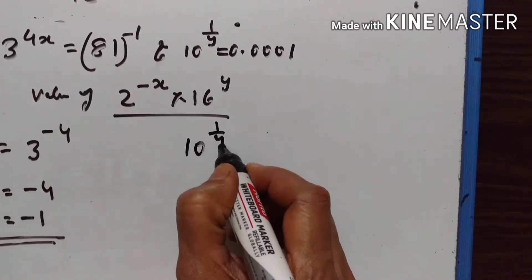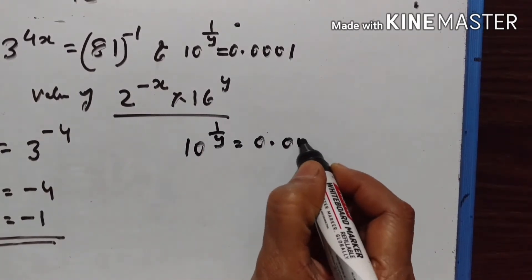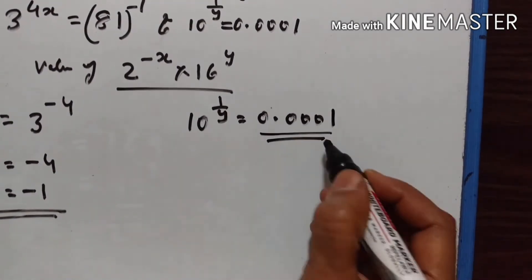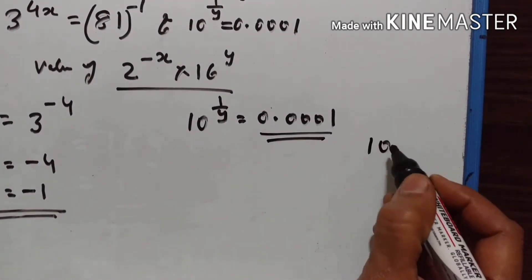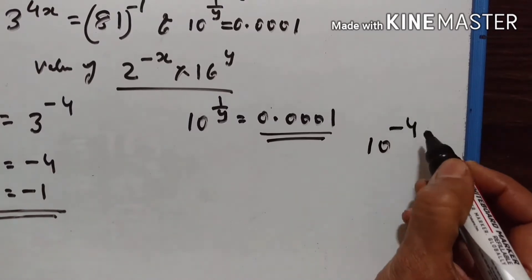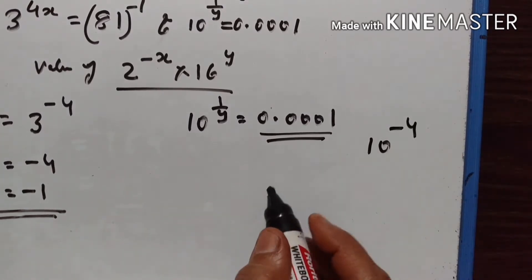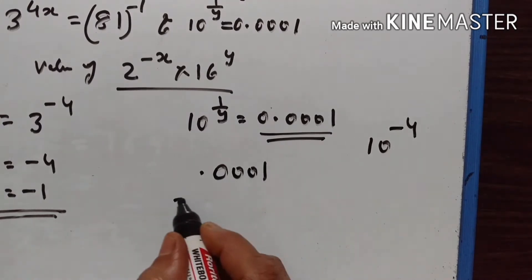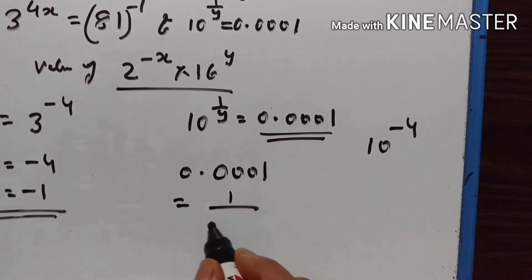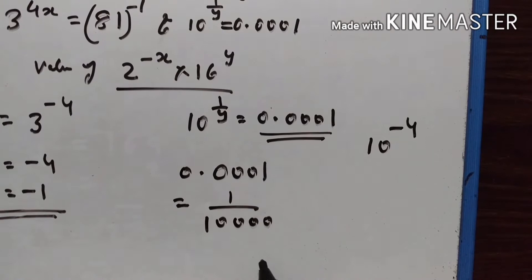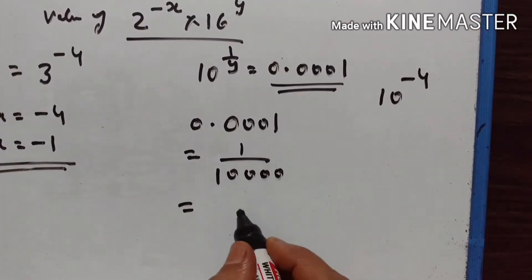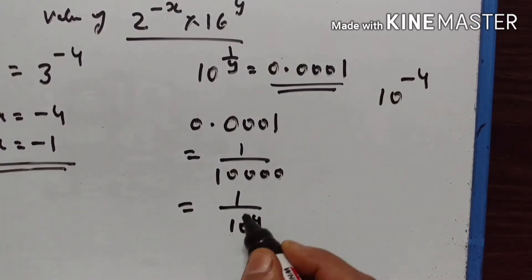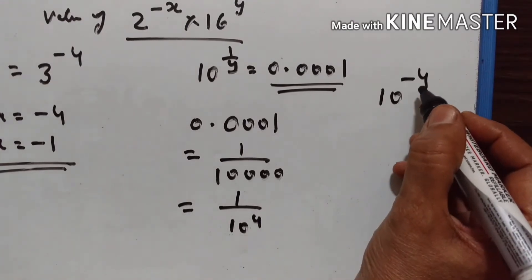Now, 10 raised to the power of 1 upon y is equal to 0.0001. This is equal to 10 raised to the power of minus 4. How? 0.0001 is equal to 1 upon 10,000, which is 1 upon 10 raised to the power of 4. When 10 comes to the numerator, it becomes 10 raised to the power of minus 4.